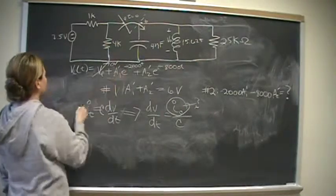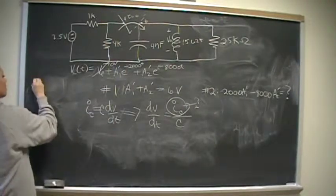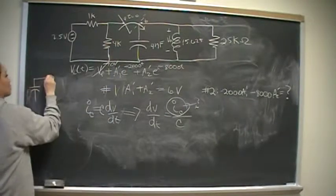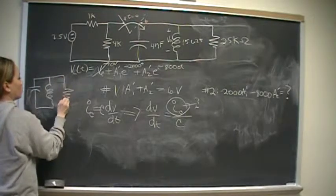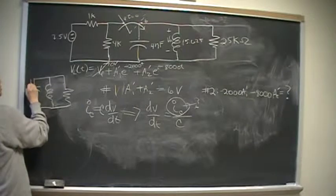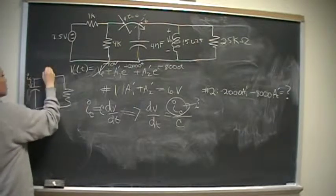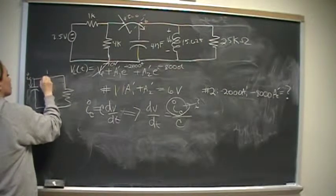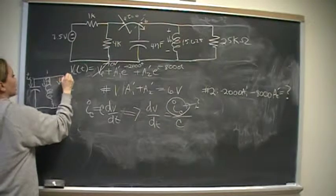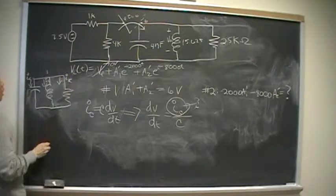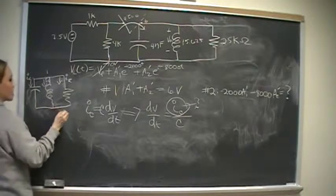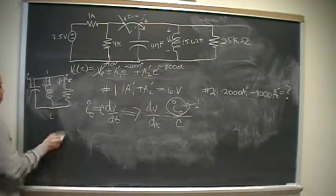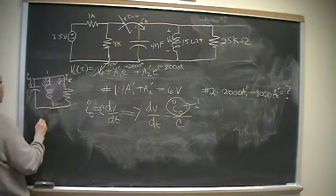To find that, we're going to do KCL at the top node. So we have I, I sub C, and we have I sub L, and I sub R. Well, the inductor has no initial stored energy, so therefore... Let's start with KCL. KCL at that node says that I sub C is going to equal...